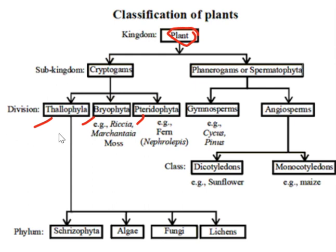If we talk about Thallophyta, it includes all algae. For example, Chlamydomonas, Volvox, etc. Thallophytes are autotrophic as they contain chlorophyll. They have a thallus-like body and thus we call them Thallophyta. The plant body cannot be distinguished into roots, stems, or leaves, and they are primarily aquatic.